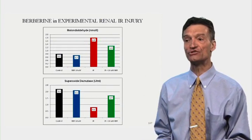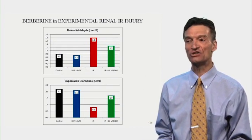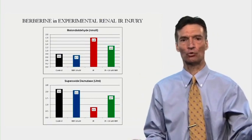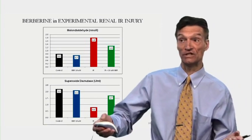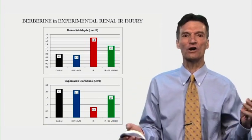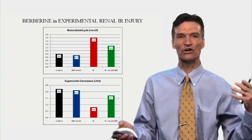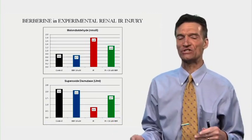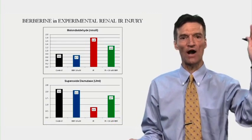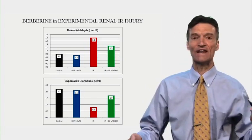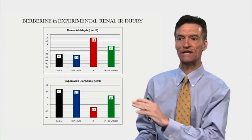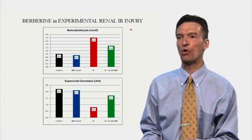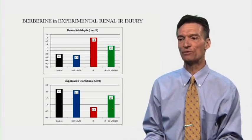Malondialdehyde rises, superoxide dismutase falls in response to this hypoxic-reoxygenation insult. Basically, whenever our cells are damaged or stressed, we get oxidative stress — we see an uptick in markers of oxidative inflammation and a reduction in our antioxidant defenses. And that occurs here, and this is blunted with berberine.